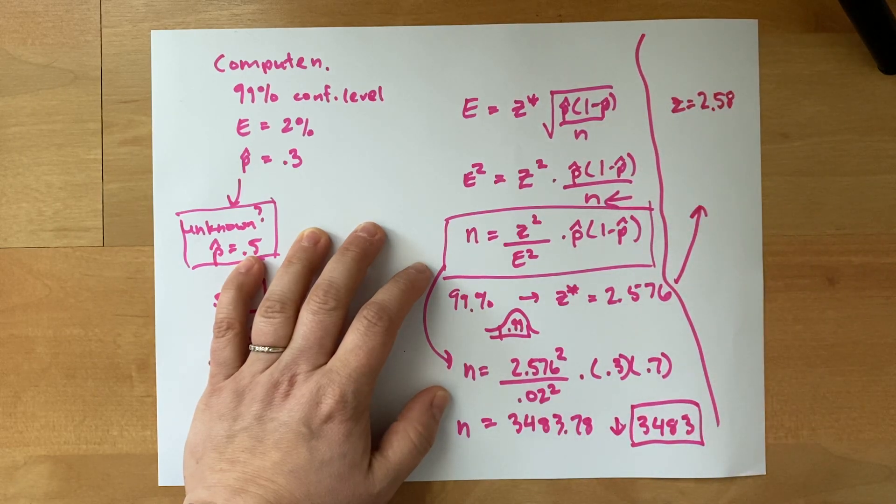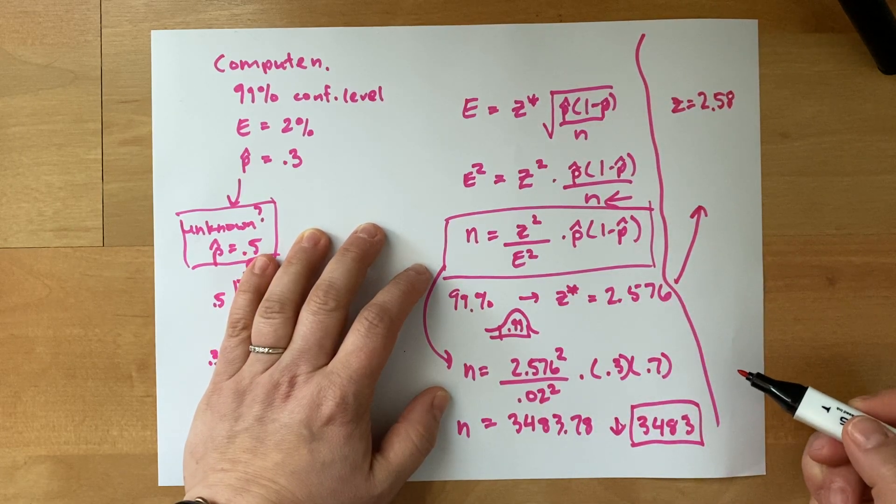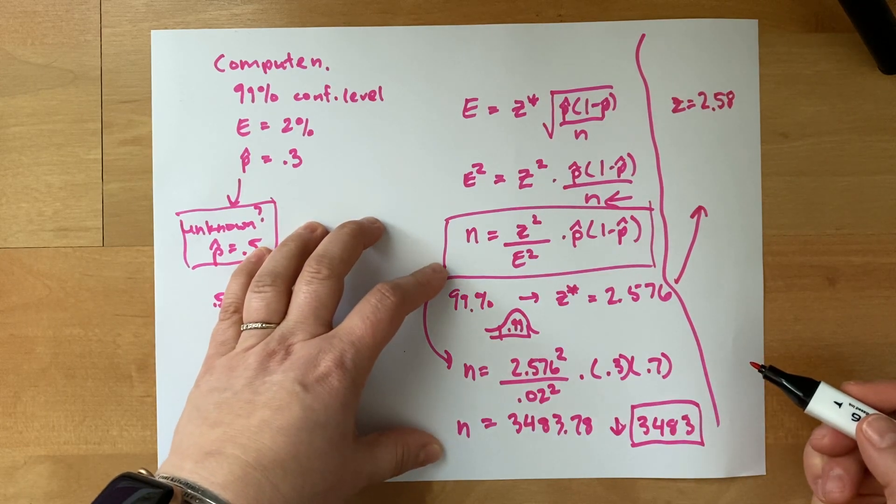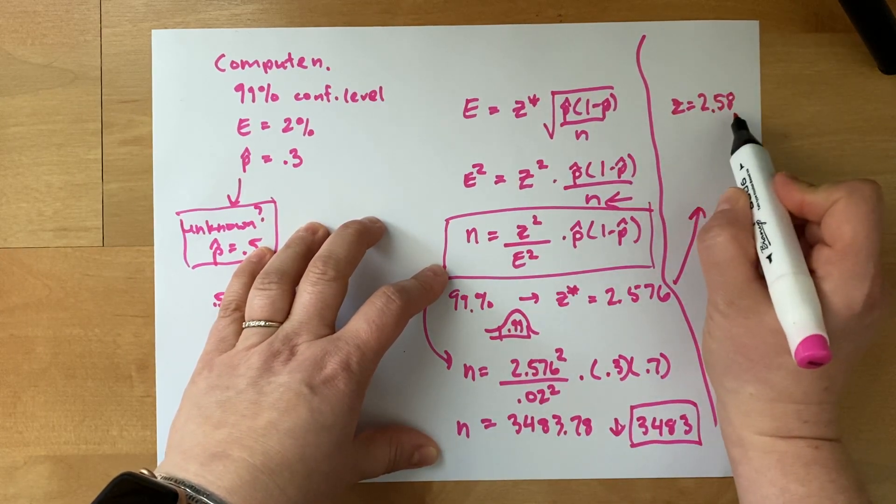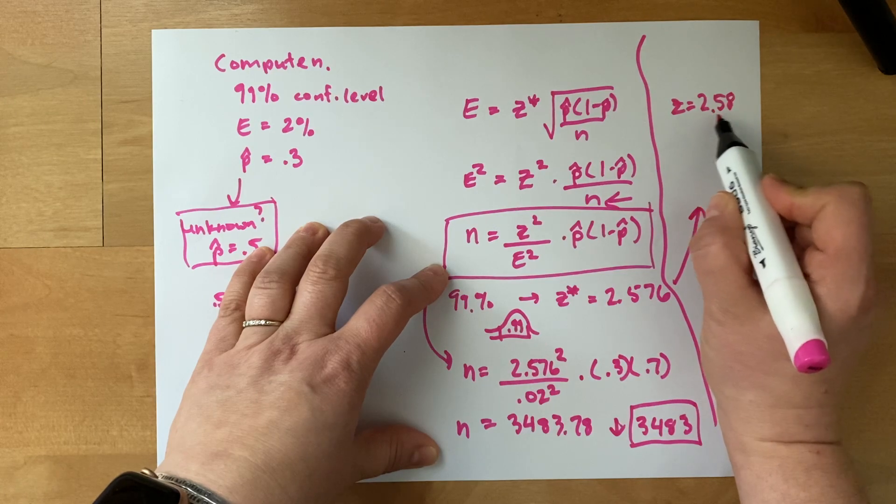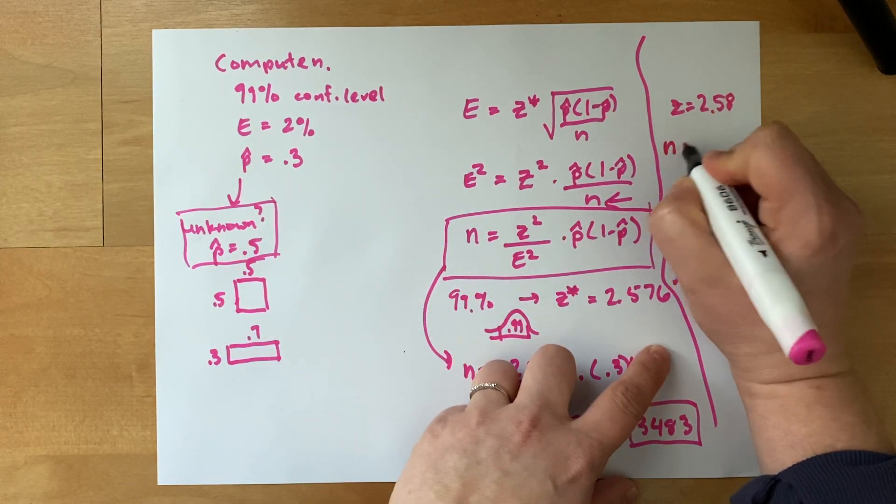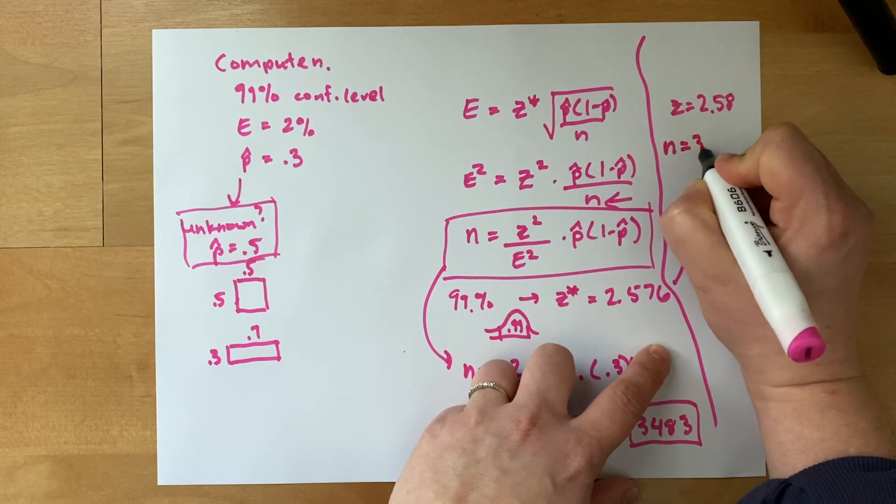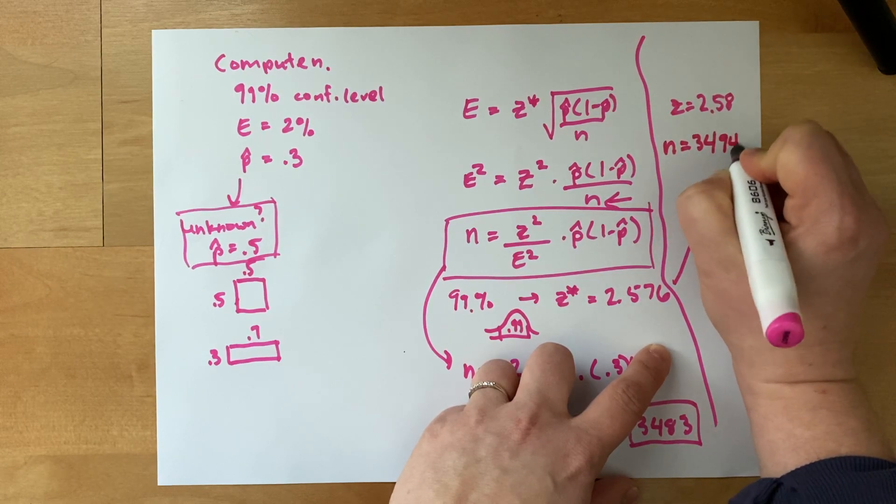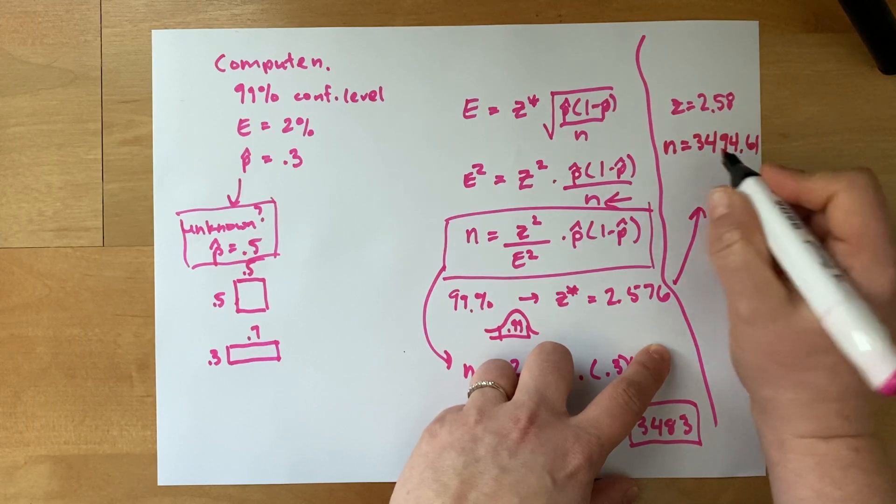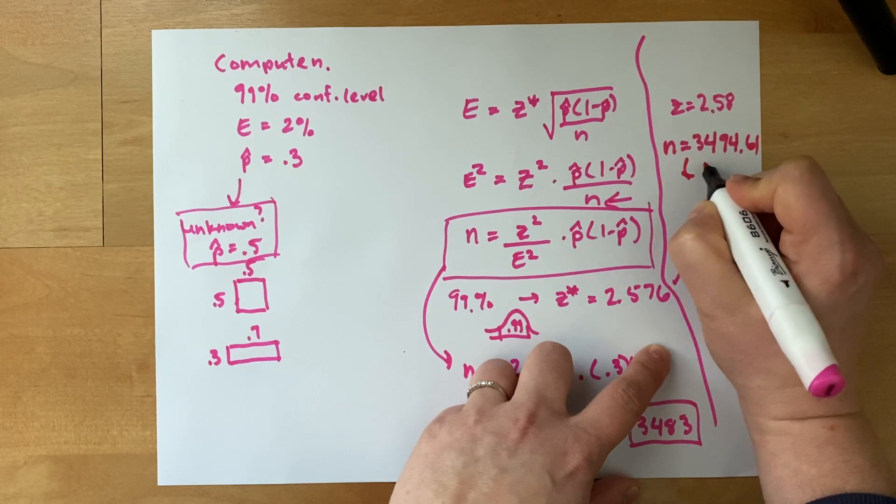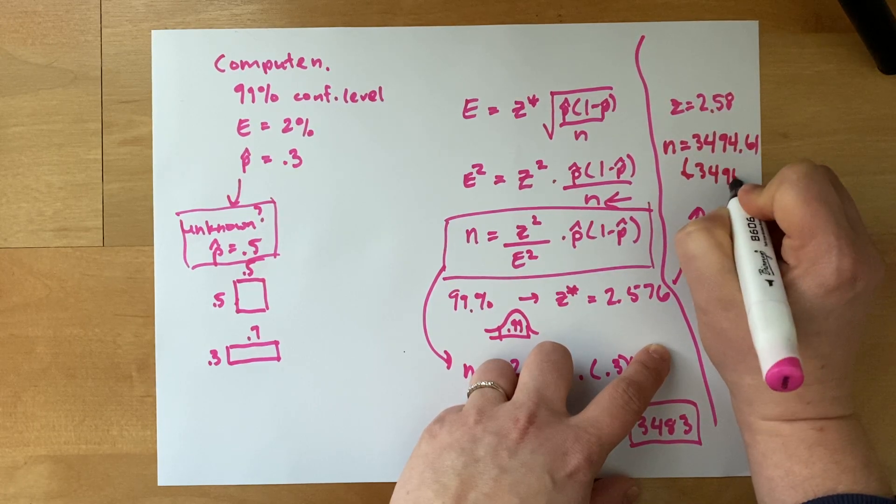Because you're like, oh, that's, I'm just going to round that z score to two decimal places. We always seem to round to two decimal places. If you used 2.58 for your z score, you will end up getting n equal to 3,494.61. Round that down to 3,494.